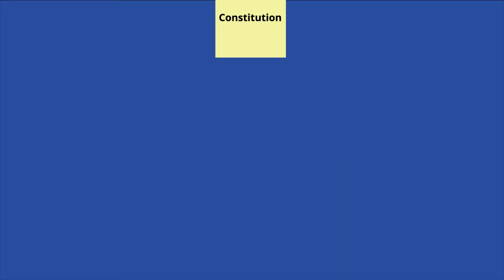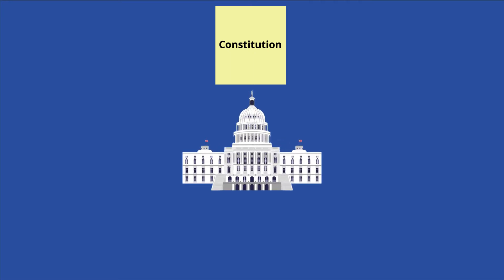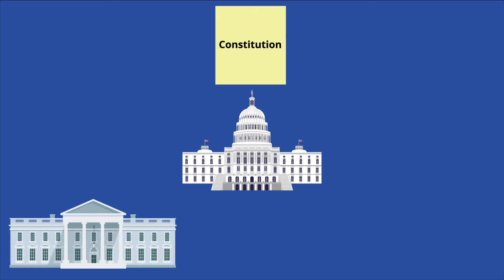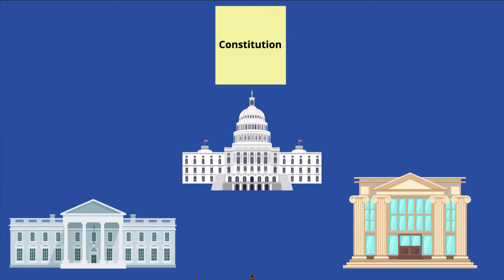While the word veto does not appear in the Constitution, Article 1, Section 7, Clause 2 outlines the president's ability to refuse to sign legislation. The framers of the Constitution thus furthered the system of checks and balances they had designed, separating the three branches of government and keeping the power in check.